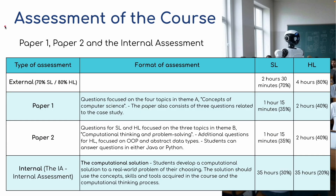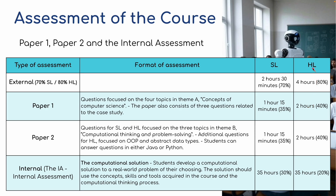So what does that mean in terms of assessment? We've got paper one, paper two, no paper three, and the internal assessment. The external components make up 70% of the overall marks for standard level and 80% for higher level. Paper one focuses on the four topics of theme A — concepts of computer science — and also consists of three questions relating to the case study. It's a two-hour paper for higher level and one hour 15 minutes for standard level, split 35% and 35% making a total of 70%, or 40% and 40% for higher level.